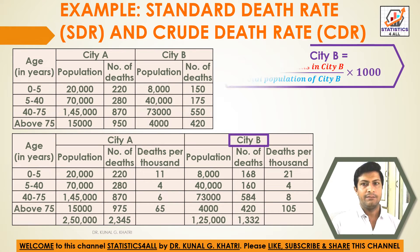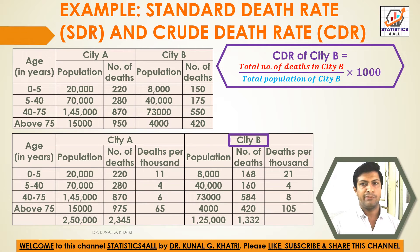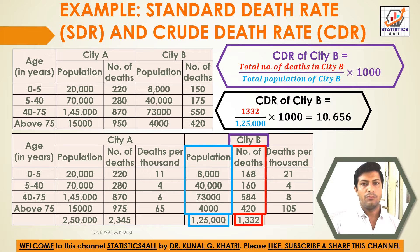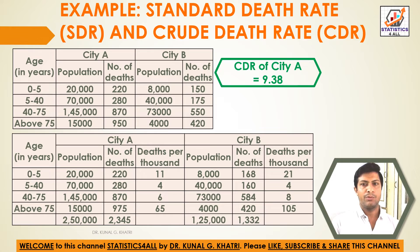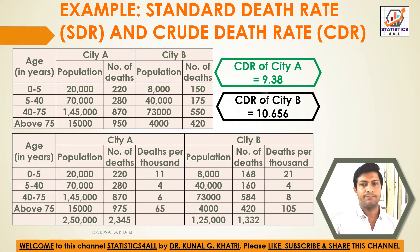Now find the CDR of city B: total number of deaths in city B divided by total population of city B, multiplied by 1000. So 1,332 divided by 1,25,000 into 1000 gives value 10.656. Therefore, CDR of city B equals 10.656.